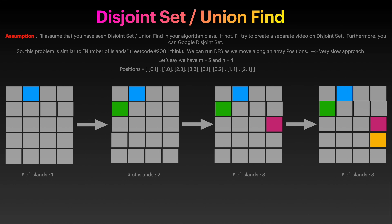Towards the end I will talk about this, but I really want you to see this concept called path compression - I think that is a very beautiful implementation. For this problem I came up with this set of positions: 0,1 then 1,0 then 2,3, and so on. We have number of rows equal to five and number of columns equal to four.